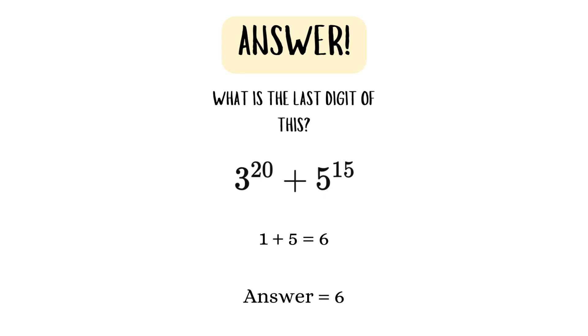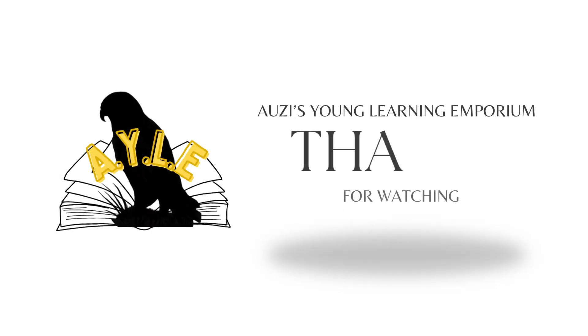So the answer to this is going to be 1, which is the last digit of 3 raised to the power of 20, plus 5, which is the last digit of 5 raised to the power of 15. That is going to be 6. So our answer is 6. Thanks for watching!